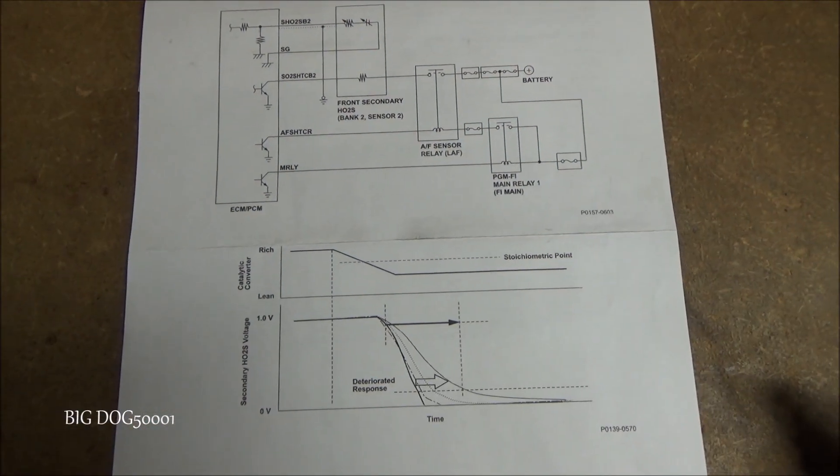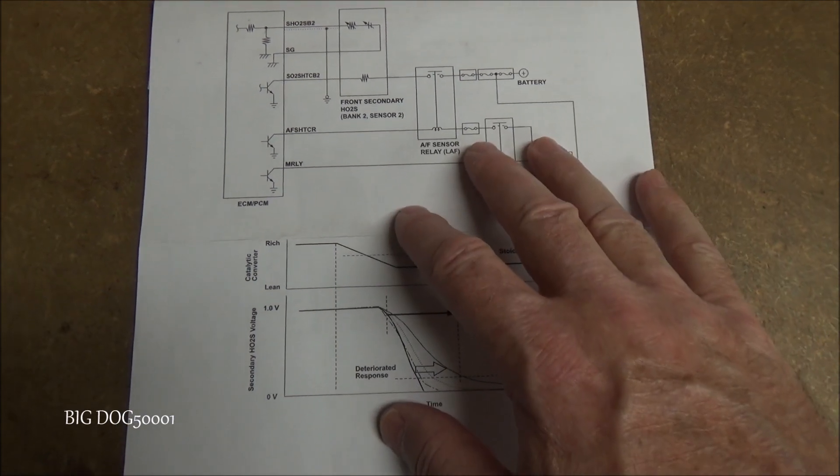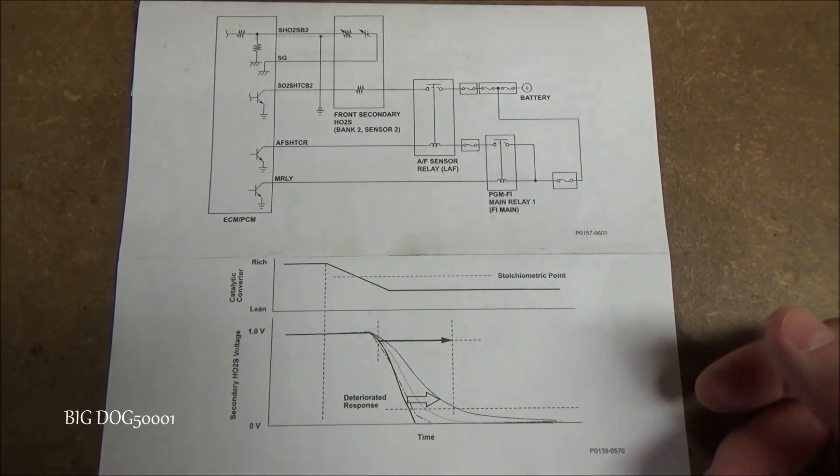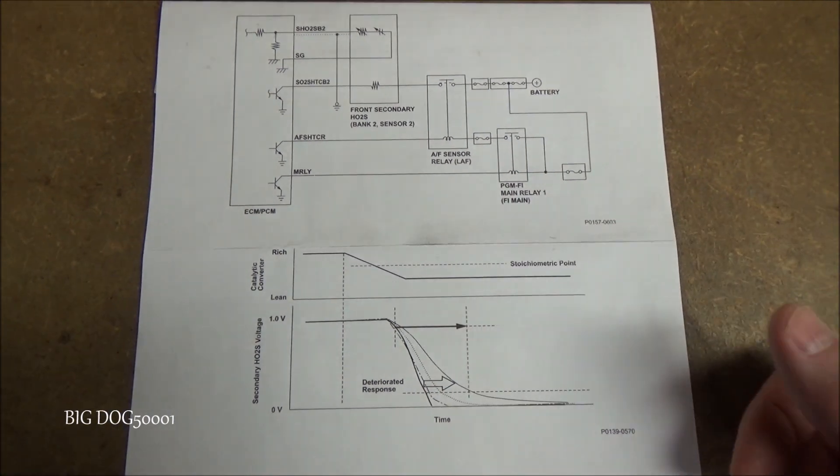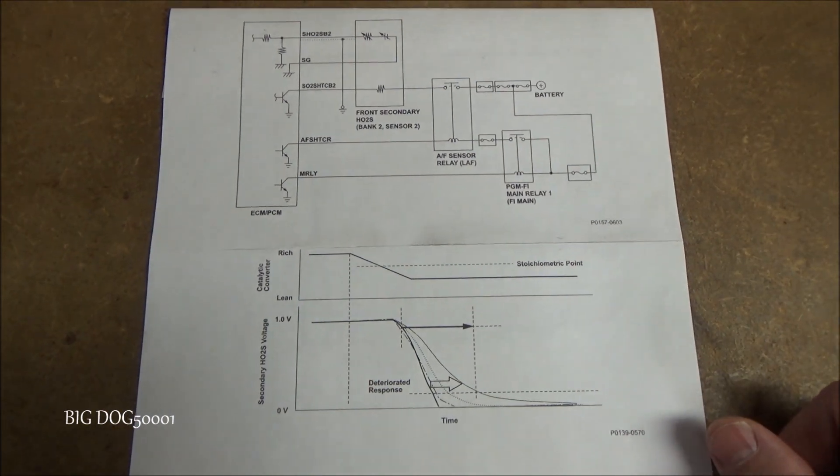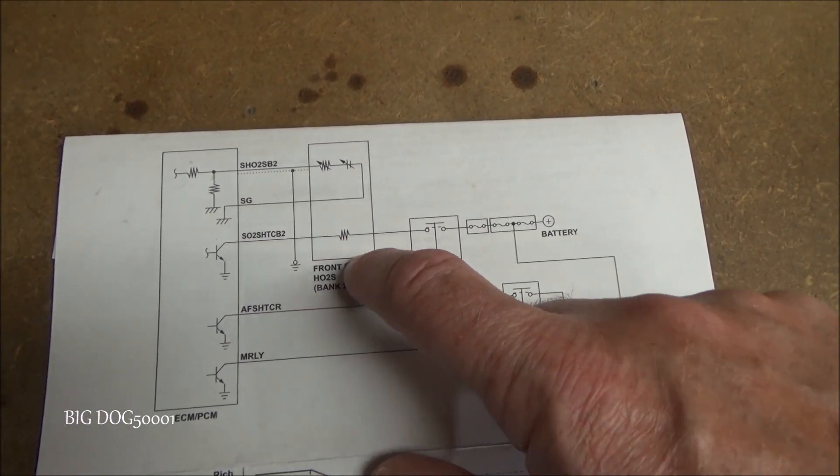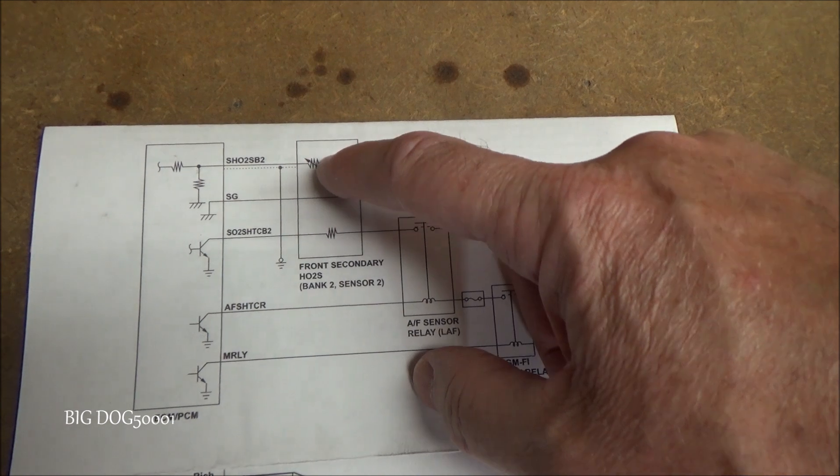I went ahead and printed up a wiring diagram. This is from Honda and it's for a slow response situation on an oxygen sensor just like we're looking at. So I figured it would help us out so you can kind of understand what I'm looking for. Right here is going to be our oxygen sensor and it's made up of two parts. We've got a heater and our sensor part.